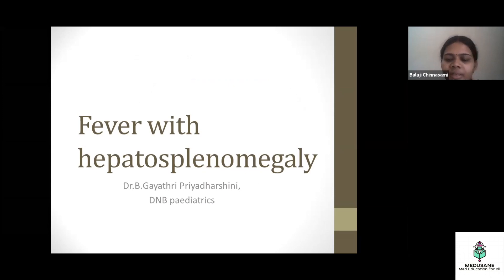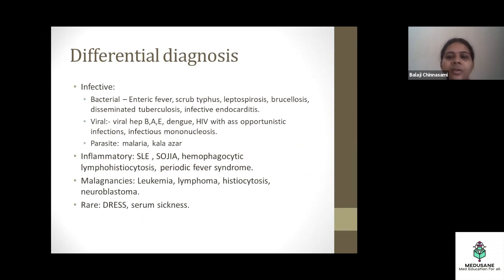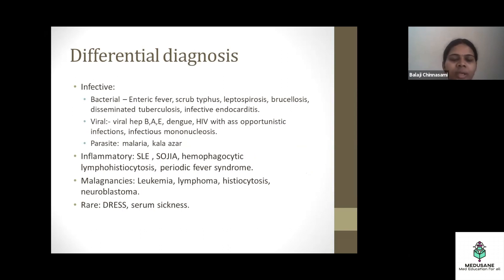Today's topic is fever with hepatosplenomegaly. We will see the differential diagnosis and how to pick up the diagnosis from symptoms. For fever with hepatosplenomegaly, always think about the first three causes: infection, inflammation, and malignancies. There are also rare diseases like breast syndrome or serum sickness.